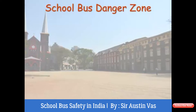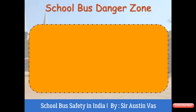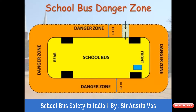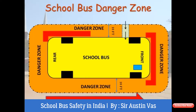Let us begin with school bus danger zone. This is the layout of the surrounding areas of a stationary school bus. This is the front part, here is the driver's seat, and the rear part of the bus. This is the door which is generally used by the school children for boarding as well as alighting the bus. And this is the 10 feet distance from the bus in all four sides which is considered to be the danger zone. Of this, these three sections are considered to be the most dangerous zones.